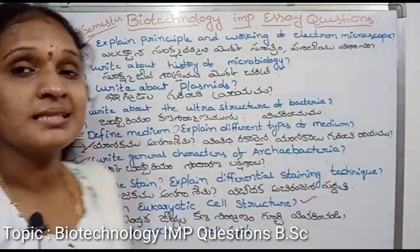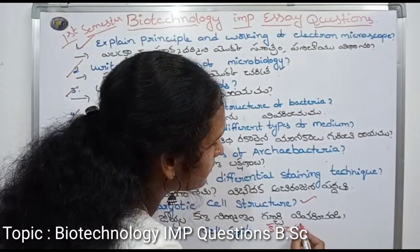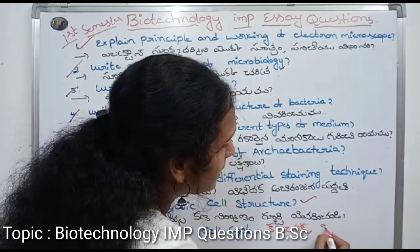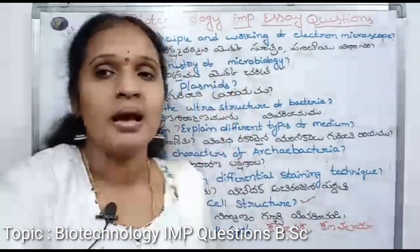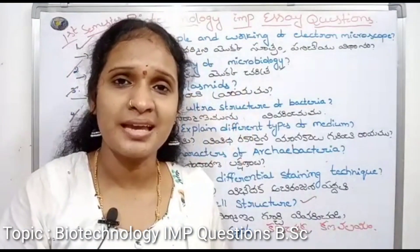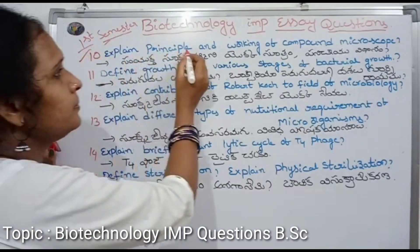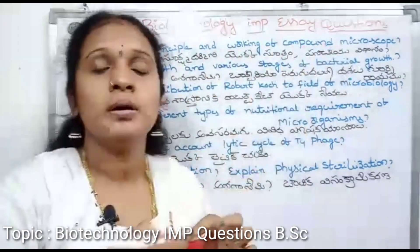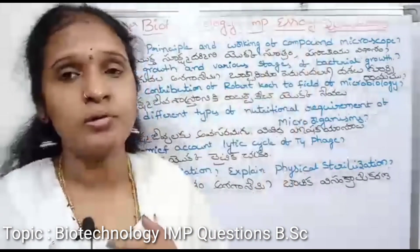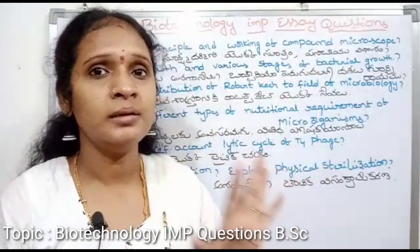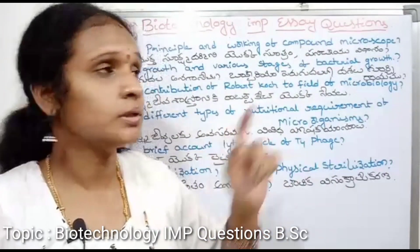Write an account of the cell cycle. It means covering the cell cycle in detail. Look at the next question, the tenth one: explain the principle and working of the compound microscope. This is the same principle as the electron microscope.